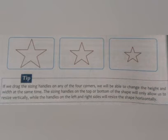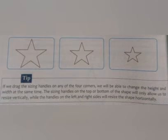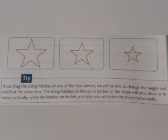You can see the three stars showing different sizes of the shape. If we drag the sizing handles on any of the four corners, we will be able to change both the height and width at the same time. The sizing handles on the top or bottom of the shape will only allow us to resize vertically, while the handles on the left and right sides resize the shape horizontally.